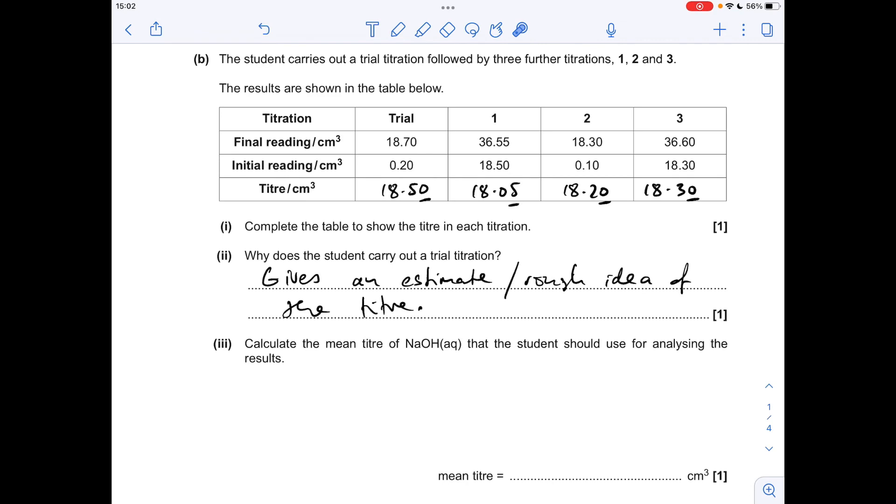Next part, we're going to calculate the mean titer the student should use for the analysis of the results. So the first thing to point out is you never ever use the trial result, so we're going to ignore that, and we only base the mean on the concordant results, so they are results to within 0.1 of each other. You can see that these are concordant, this one's just a little bit too different, so we're going to base the mean on those two, so obviously the mean of those two is 18.25.